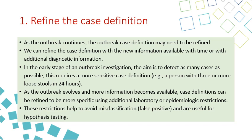The first step in follow-up investigations is to refine the case definition. As the outbreak continues, the case definition may need to be refined with new information available over time and additional diagnostic information. In the early stage of an outbreak investigation, the aim is to detect as many cases as possible, requiring a more sensitive case definition — for example, a person with three or more loose stools in 24 hours. As the outbreak evolves and more information becomes available, the case definition can be refined to be more specific using additional laboratory or epidemiological restrictions, which help avoid misclassifications and false positives and are useful for hypothesis testing.